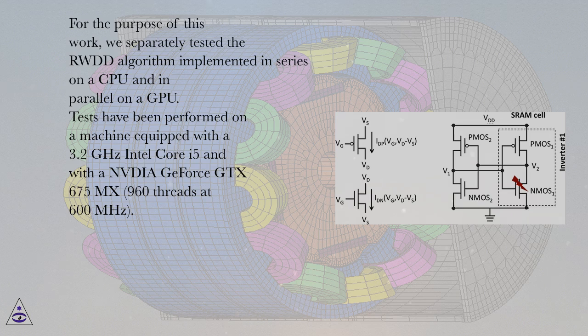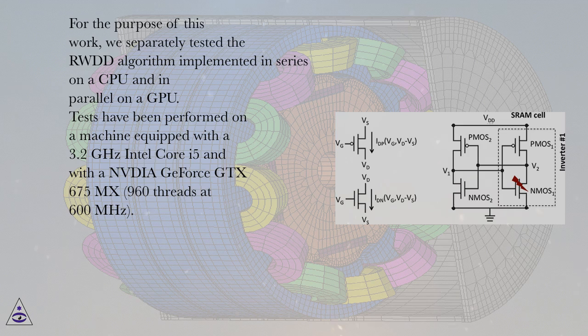Tests have been performed on a machine equipped with a 3.2 GHz Intel Core i5 and with a NVIDIA GeForce GTX 675MX, 960 threads at 600 MHz.